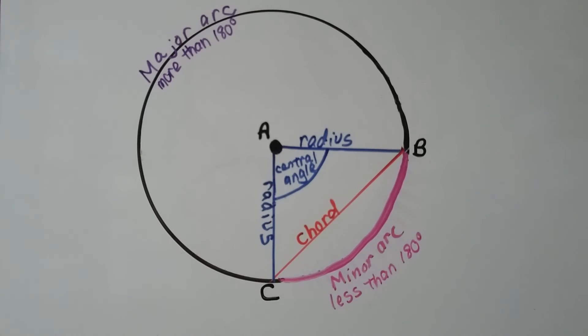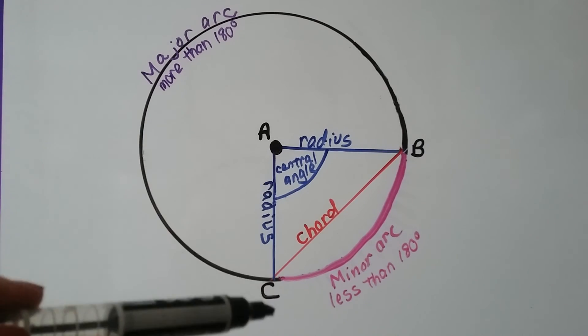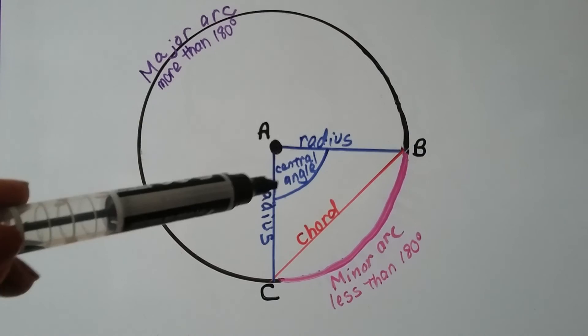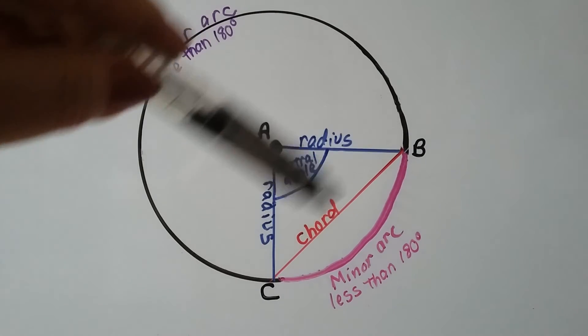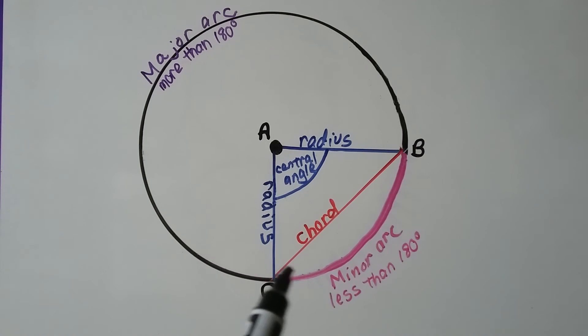So a quick recap before we move on to the next lesson. So again, this radius here and this radius here form this central angle, don't they? We have a chord BC here, and we have a minor arc right here. It's less than 180 degrees, and a major arc is more than 180 degrees. All right? So that's what we learned in 12.2 A and B.